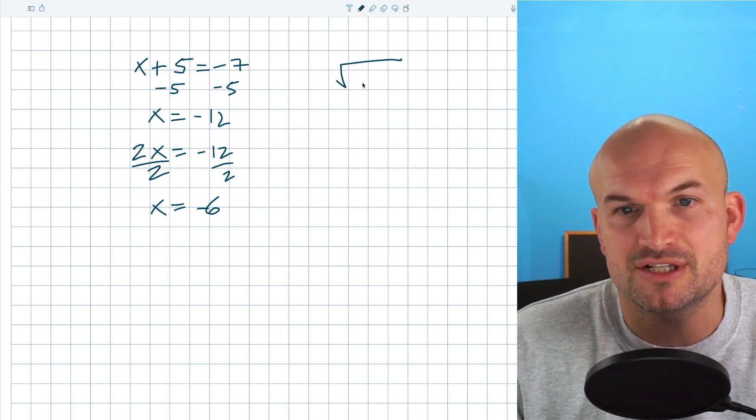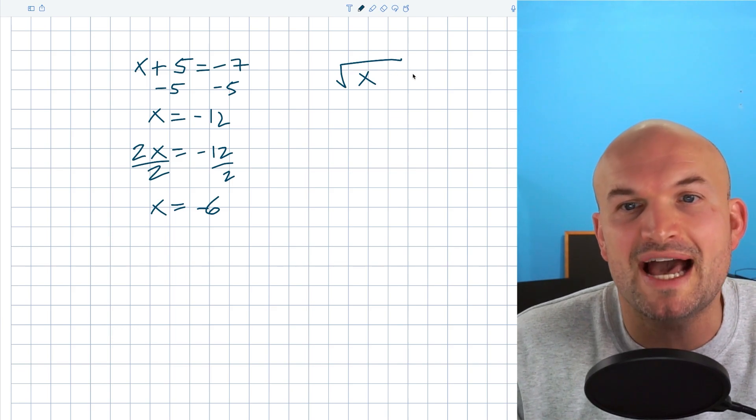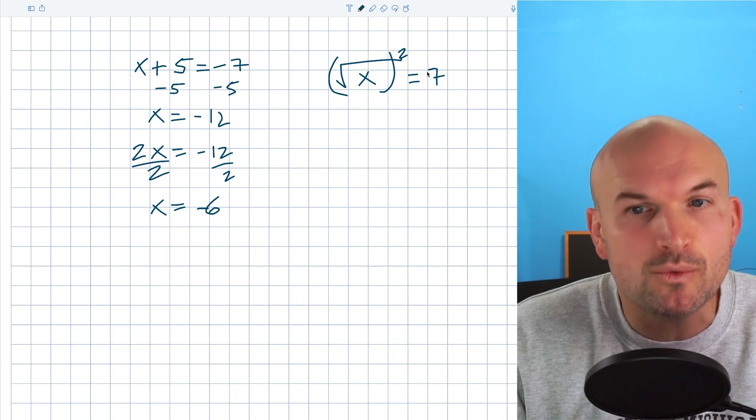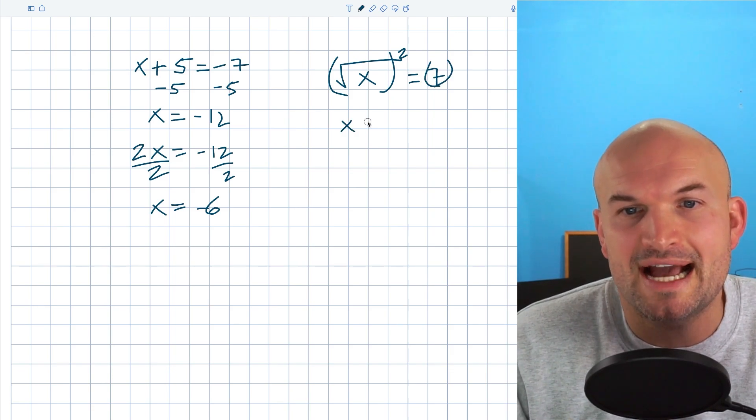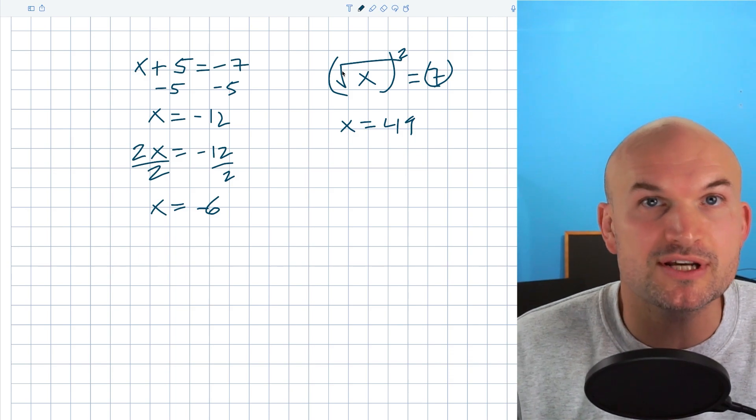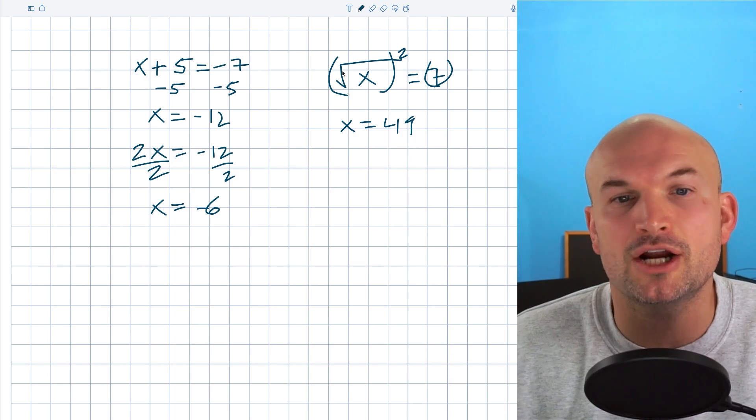And then we started exploring some different operations. For instance, like the square root of x equals 7. Now to undo the square root of something, what we do is we would square both sides. And therefore, I get x equals 49. And we could do this with the squaring, the square root, the cubing, the cube root. And again, we had our inverse operations.